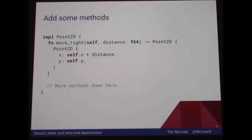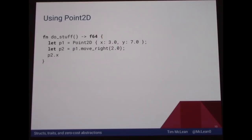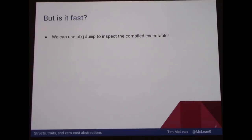Now we can look at an example of using this move_right method. We create a point called p1, we specify a value for x and a value for y, then we call p1.move_right. We get a new point back, p2, and then we access p2.x and return that. So the question is: is this code fast? We're talking about Point2D, we have all of these structs being passed around, but is this fast?